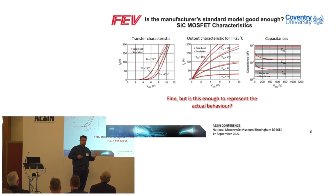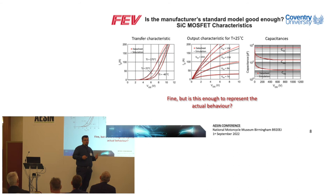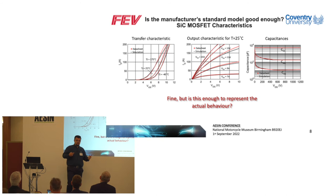Is this model good enough? The designer asks himself, and then starts to validate the model against the datasheet. In our case, for the transfer characteristic, output characteristic, and capacitance characteristic, the transients look good. So the model should be good enough to provide us with the real behavior. However, is this enough? The question remains.